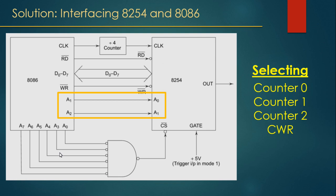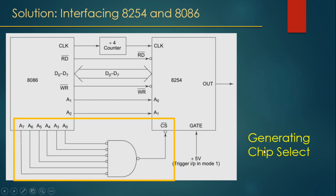The 8086 has an even address bank and an odd address bank; we connect the even address bank to 8254. Address lines A1 and A2 connect to pins A0 and A1 of 8254, which select the counter: 00 = counter 0, 01 = counter 1, 10 = counter 2, 11 = CWR. The remaining address lines A3 through A7 pass through a NAND gate to generate the chip select signal.